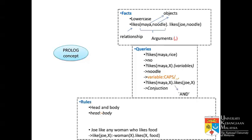Apart from facts, Prolog also accepts rules. So what do rules contain? Rules contain a head and a body. In normal language we use 'if' — for example, if it is cloudy and not windy, then it will rain. The 'if' part is the body and what happens next is the head. So in this case the sentence is 'Joe likes any woman who likes food'. We read this as: Joe likes X if X is a woman and X likes food.